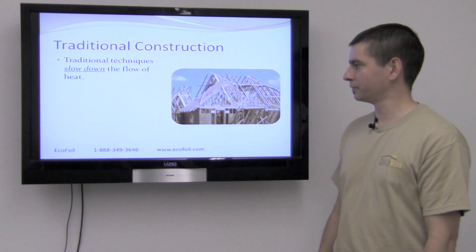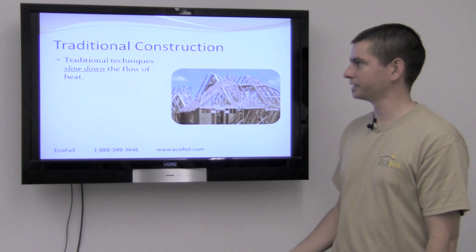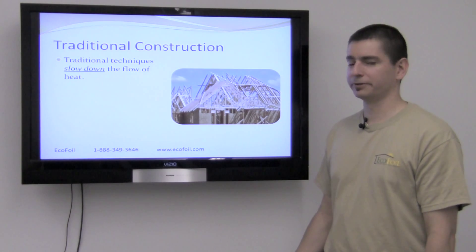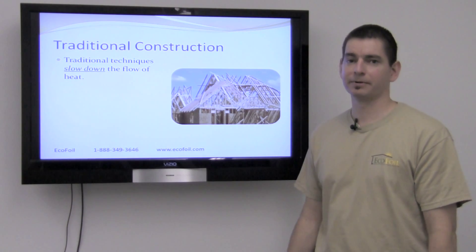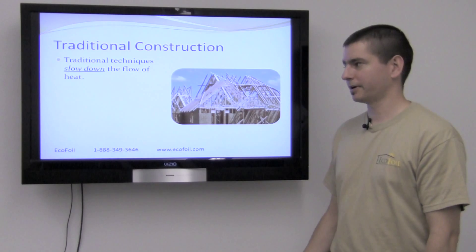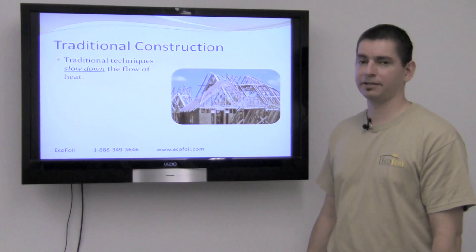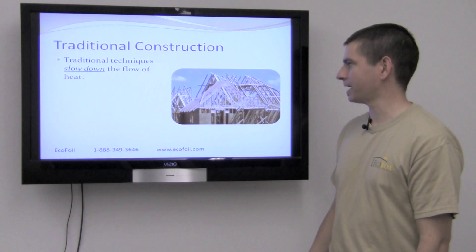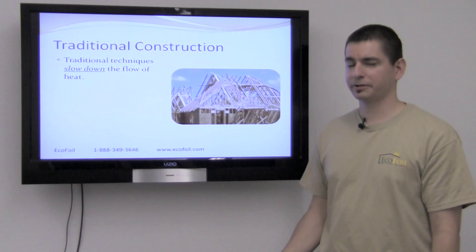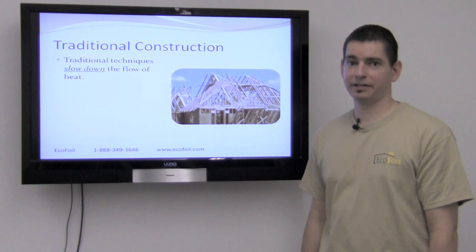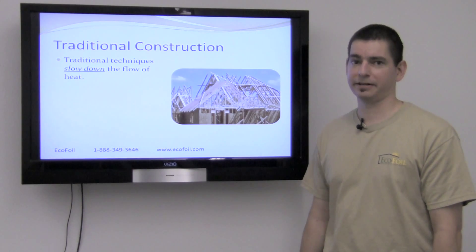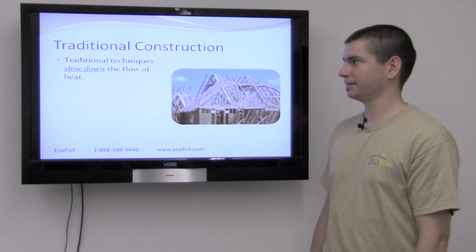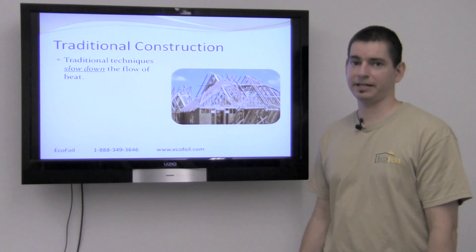Traditional construction methods involve structural framing members that create spaces between the floor joists, the wall studs, and the rafters. These spaces are all then filled with mass insulation like fiberglass or cellulose. Cracks and gaps are filled with expanding foam or caulking, and the sheeting is wrapped with a house wrap.